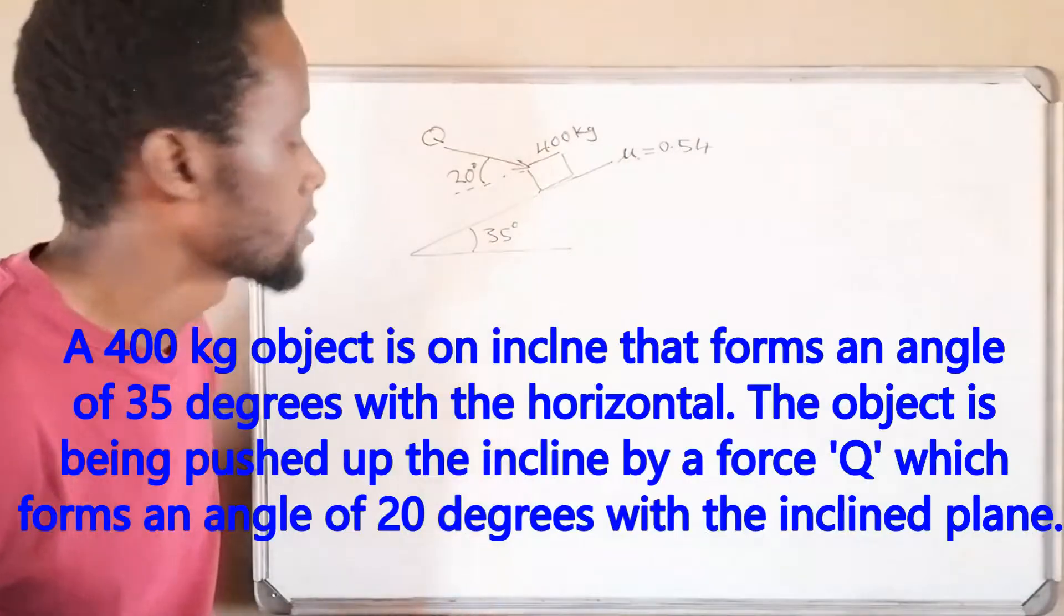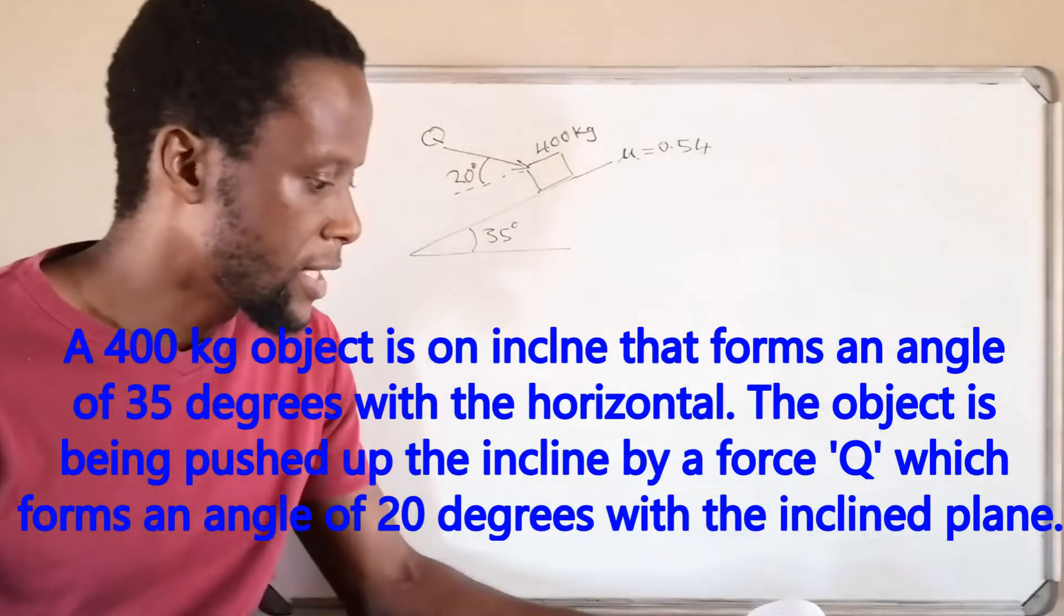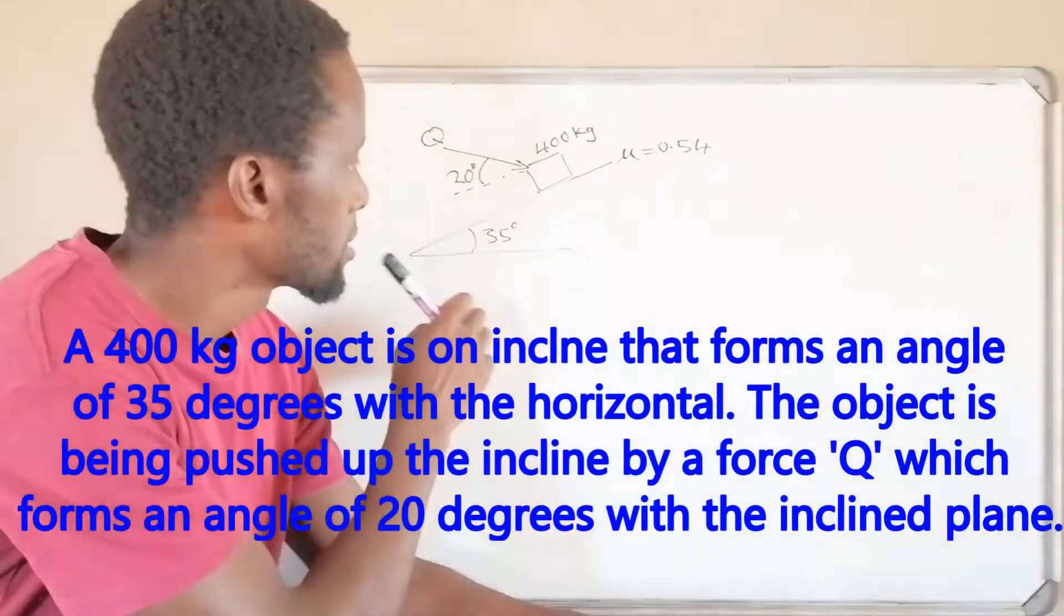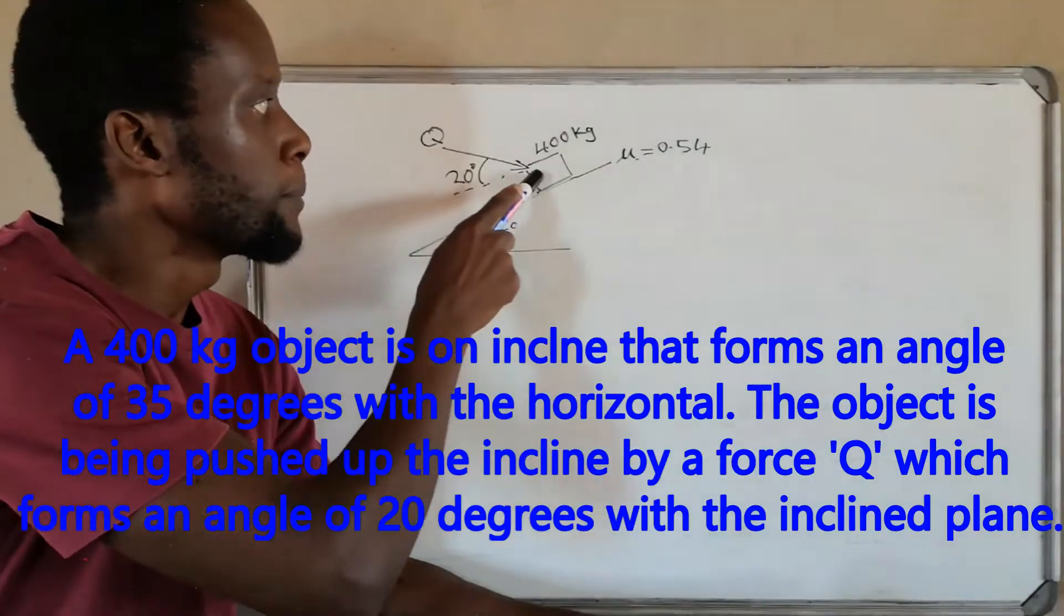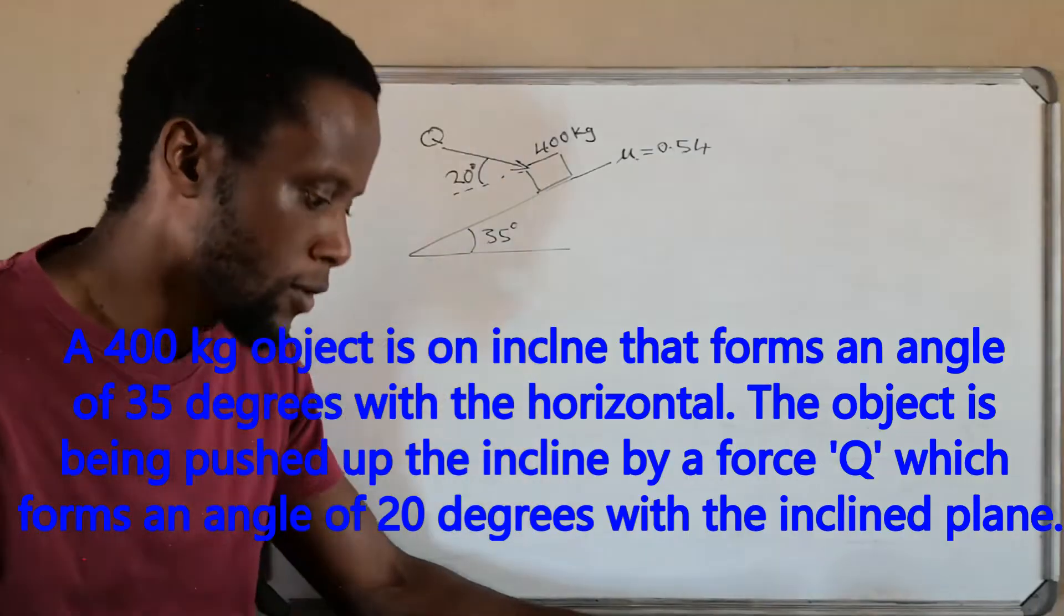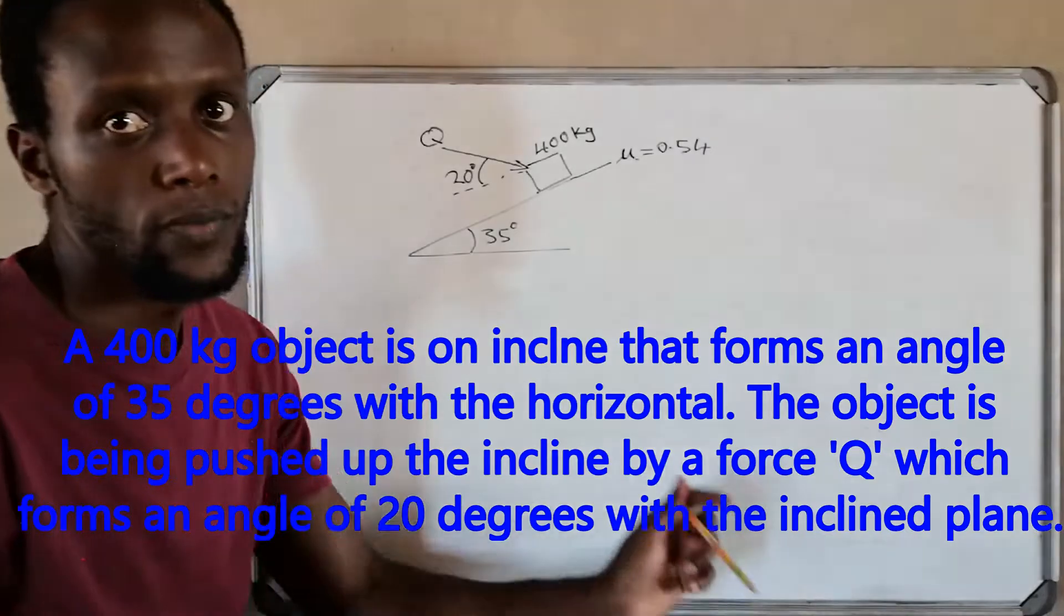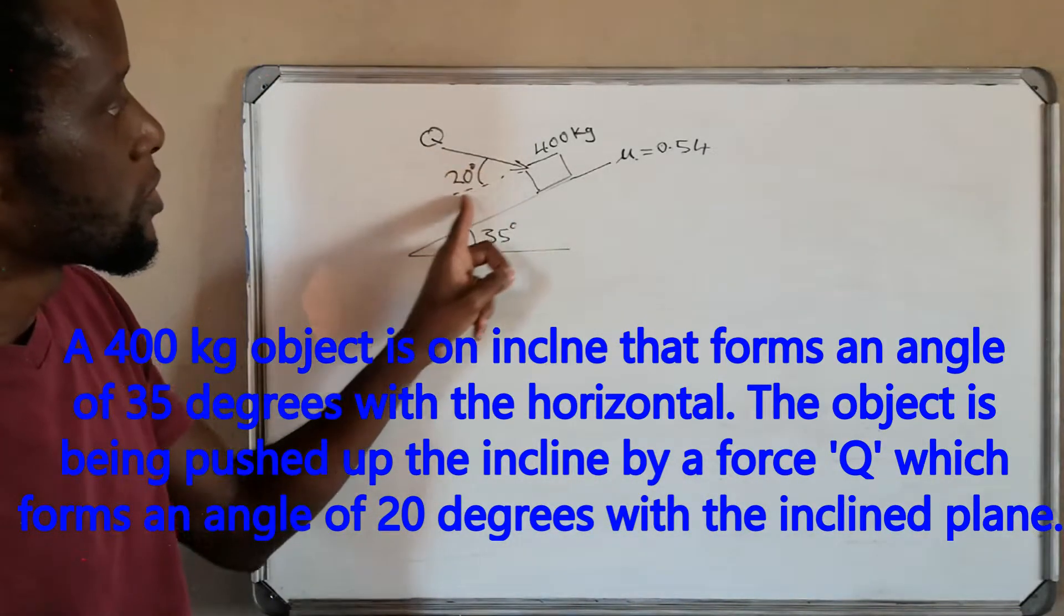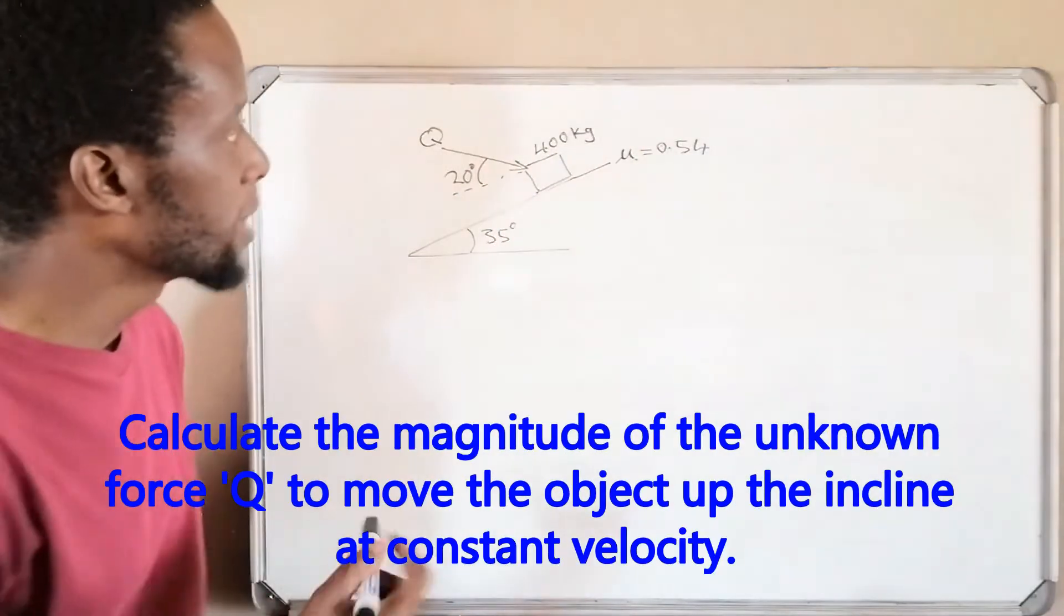Okay, here's a question. The question says a 400 kg object is on an incline that forms an angle of 35 degrees to the horizontal, and it is being pushed up the incline by a force Q which forms an angle of 20 degrees to the plane, to the surface. So the force that we have forms an angle 20 degrees to the plane and it is pushing this object going upwards.